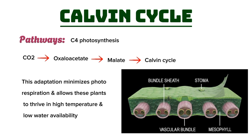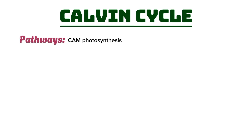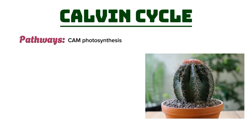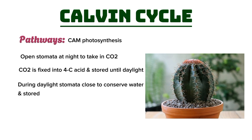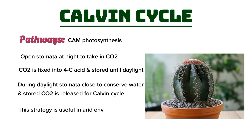Lastly, the CAM pathway, or crassulacean acid metabolism, is found in succulents like cacti. These plants open their stomata at night to take in carbon dioxide, which is fixed into a 4-carbon acid and stored until daylight. During the day, the stomata close to conserve water, and the stored carbon dioxide is released for use in the Calvin Cycle. This strategy is particularly beneficial in arid environments.